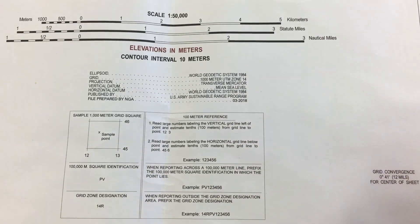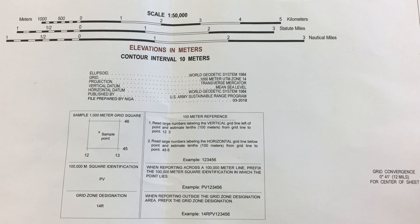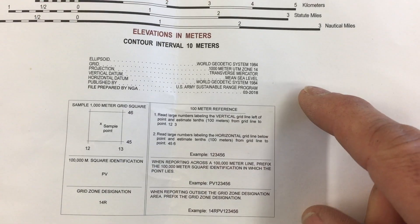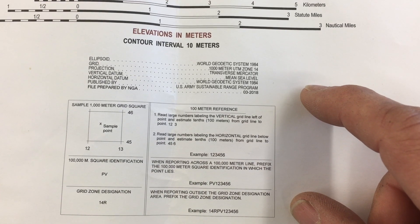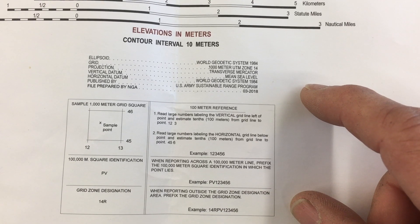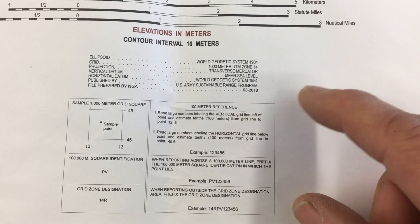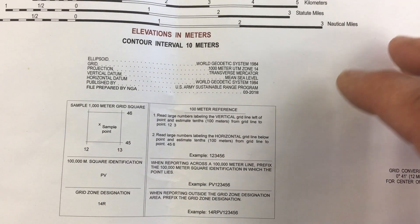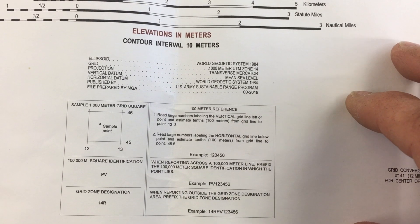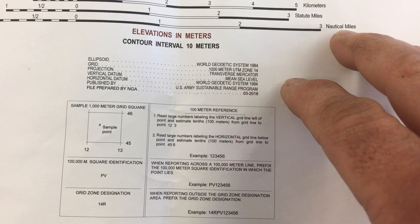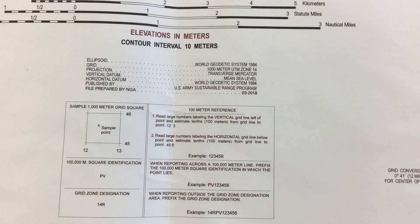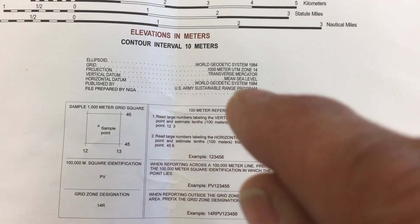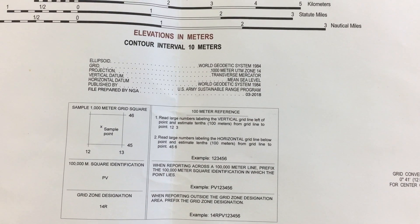If that contour interval was 60 feet and you have a bunch of them packed together, that's a very steep area you don't want to cross. Directly underneath that, we have our grid zone designator and 100,000-meter designating information. This is really important if you're trying to send a six, eight, or ten-digit grid coordinate from this map to somebody else in another part of the world. I'll talk more about that when we get to grids.